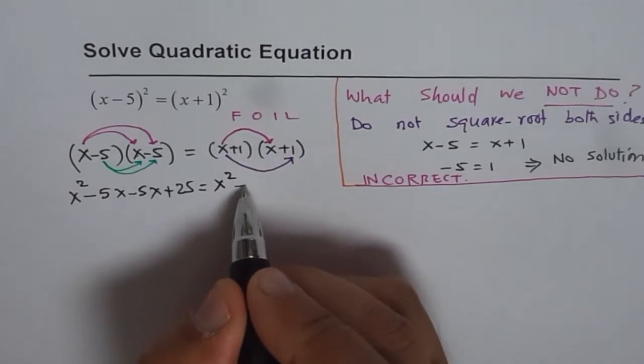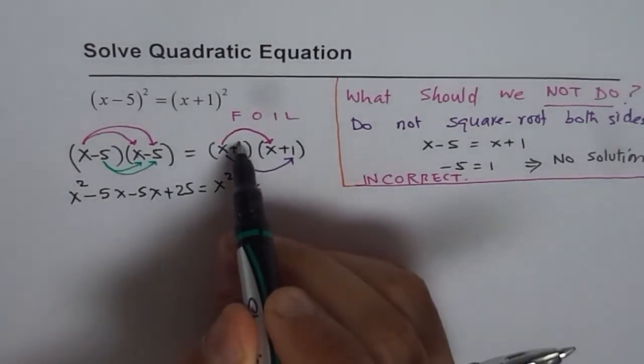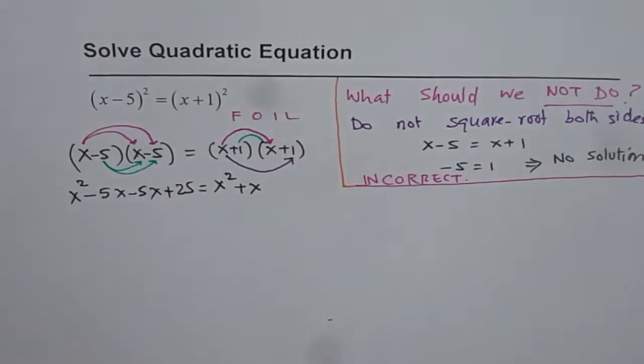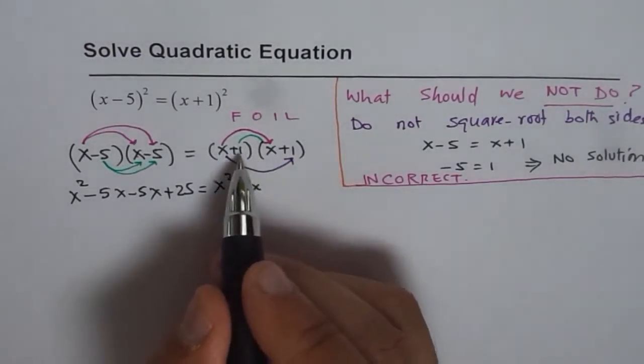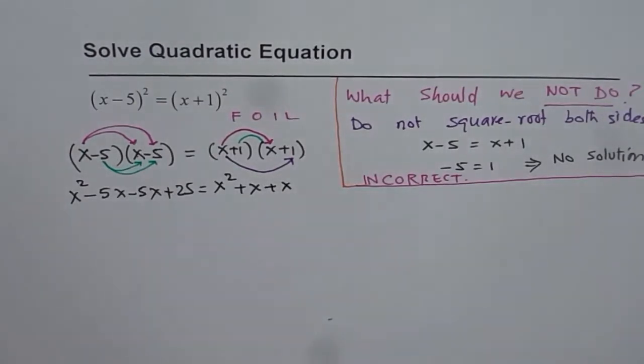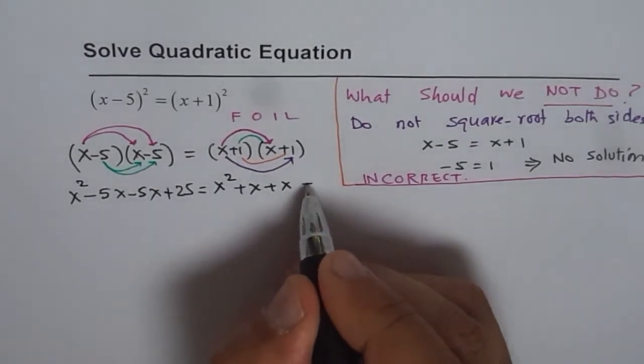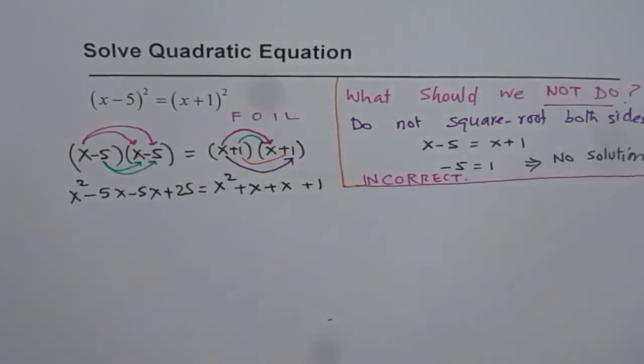Inside terms is x times 1, which is again x. And then the last terms, last terms here are 1 and 1. So that is 1. Once you do that, combine the like terms.